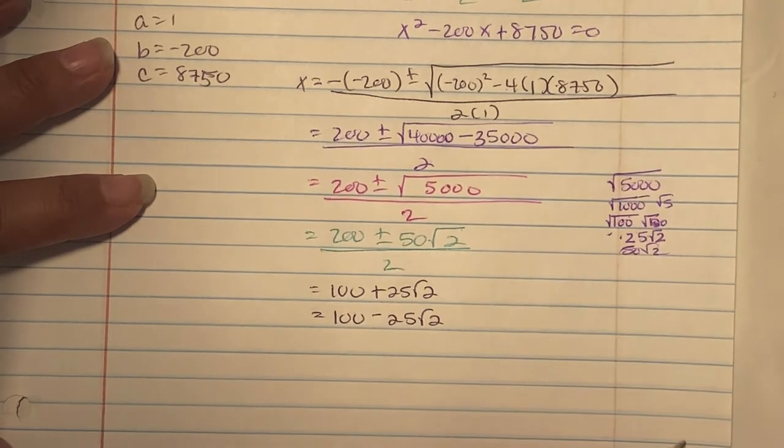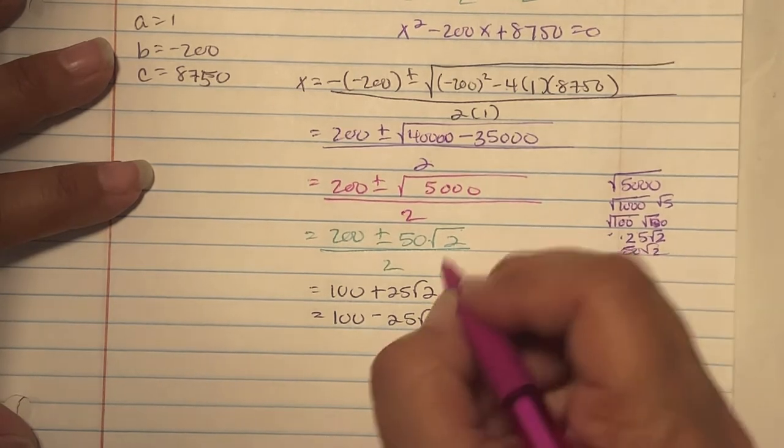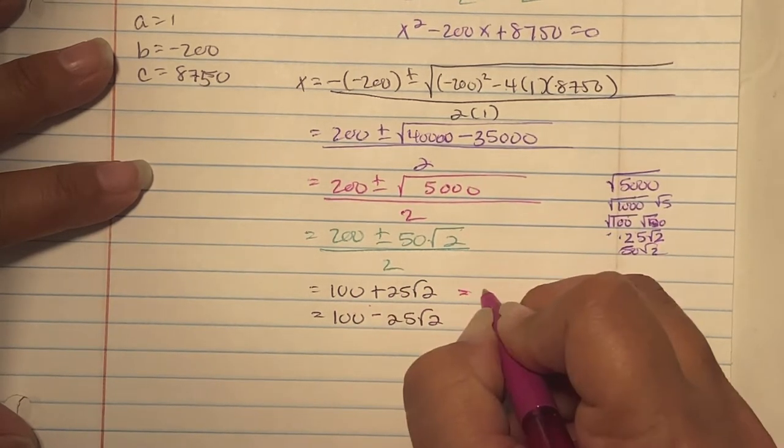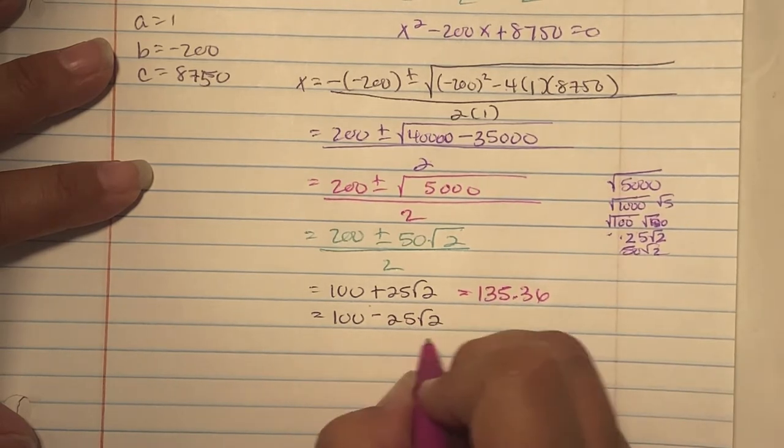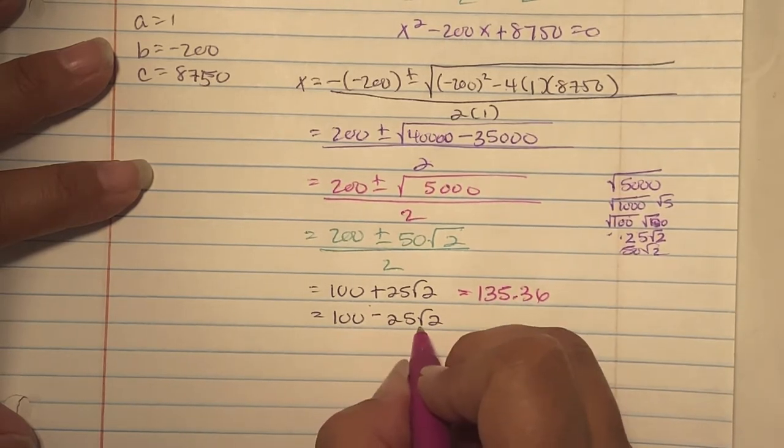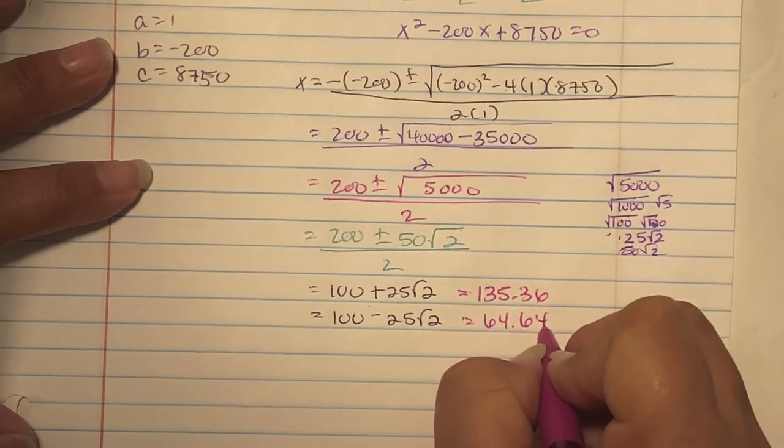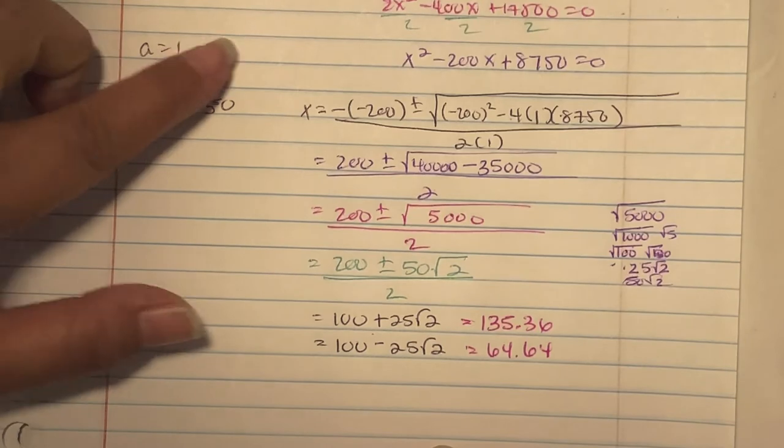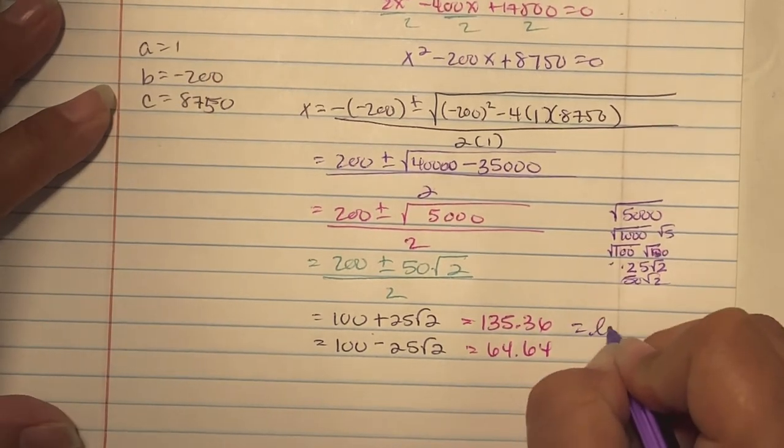The first one, when you do the calculator math, 100 plus 25 square root of 2, you get 135.36. The second one is 100 minus 25 square root of 2, we end up with 64.64. Remember, one is the long leg, one is the short leg. This is the long leg. This is the short leg.